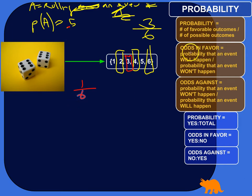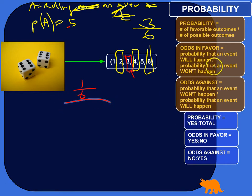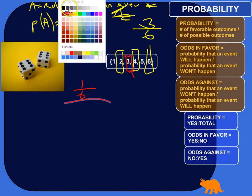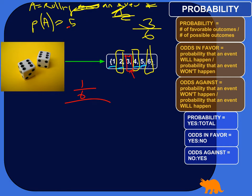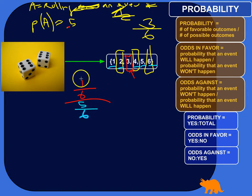The odds in favor would be the probability that an event will happen. If our event is rolling the number three, the probability is one out of six. Now versus the probability that the event won't happen — what are the odds that you won't roll a three? There are one, two, three, four, five numbers that aren't threes, so you've got a five out of six probability of not rolling a three.